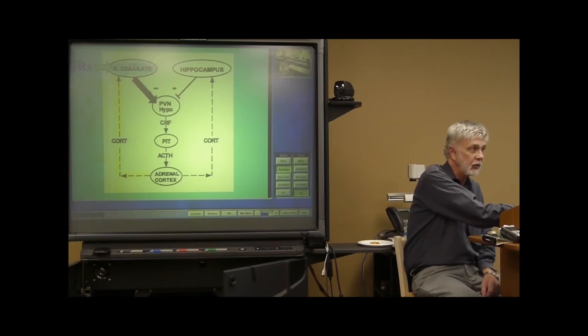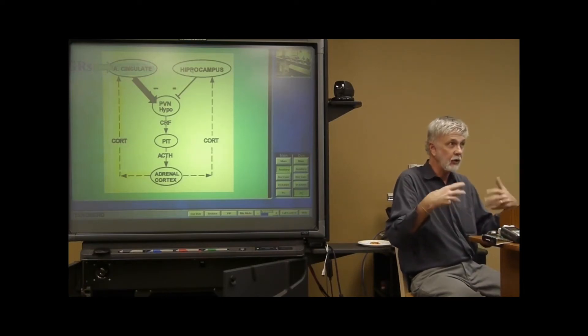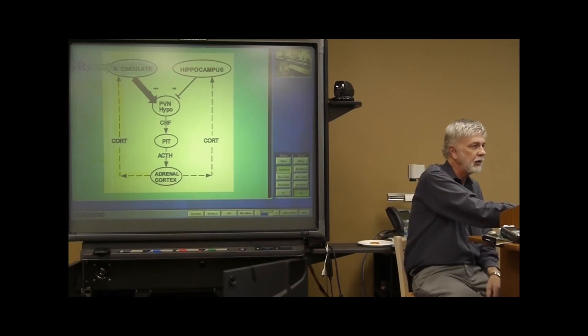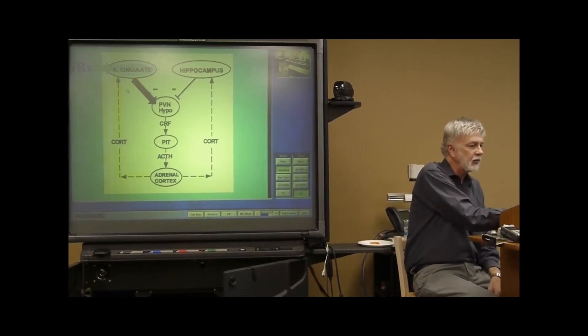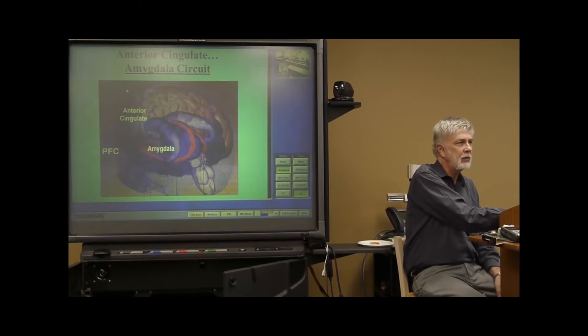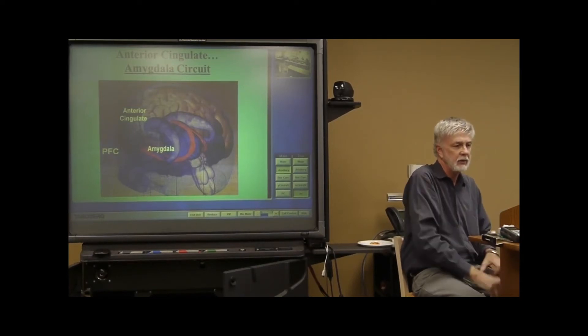So, again, we have top-down control. And so it's really like you have two brain structures that are working in harmony with one another to shut down the HPA axis. But, as you might imagine, hypercortisolemia can cause problems.